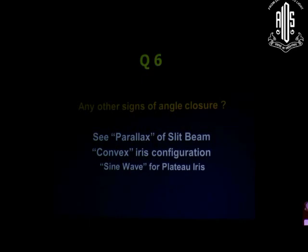Are there any other signs of angle closure apart from seeing obstruction to the trabecular meshwork or the pigment clumps? The first is: you put in a gonioscope, see convex iris configuration, angle structures not visible. In a patient with open angle, there was continuity of the slit beam throughout. Here, when you narrow the slit beam, you will see a difference — a parallax — between the slit beam on the iris and on the cornea. This is a subtle sign that the angle is closed; you cannot see the continuity of the beam. The beam from the cornea and beam from the iris have a distance between them, unlike the open angle where there is a continuous beam on the angle structure.